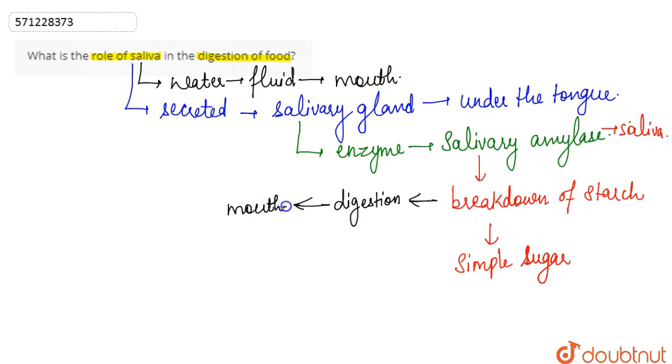It starts from the mouth itself, and this process of digestion of starch into simple sugar in the mouth by salivary amylase is basically known as the chemical digestion.